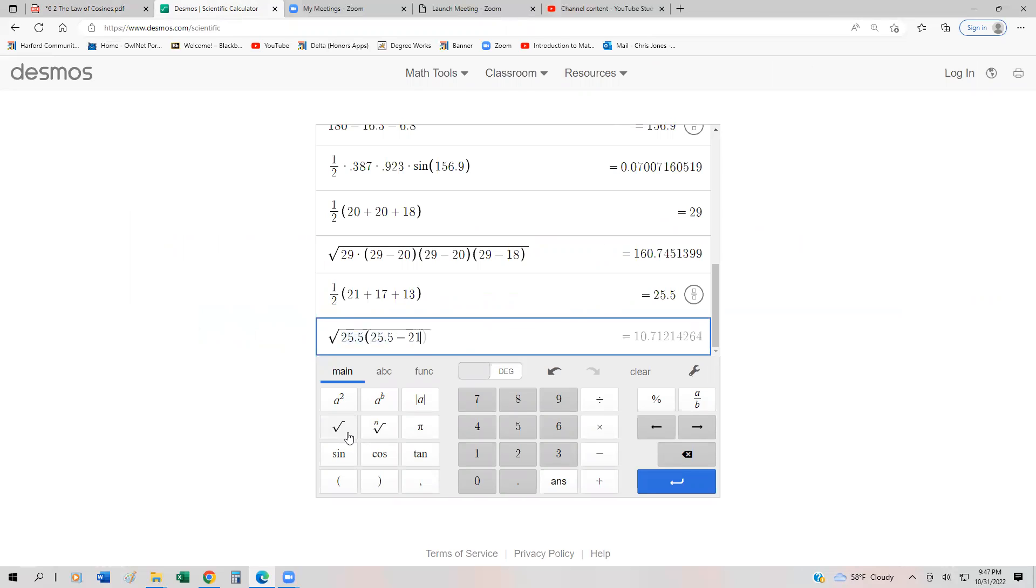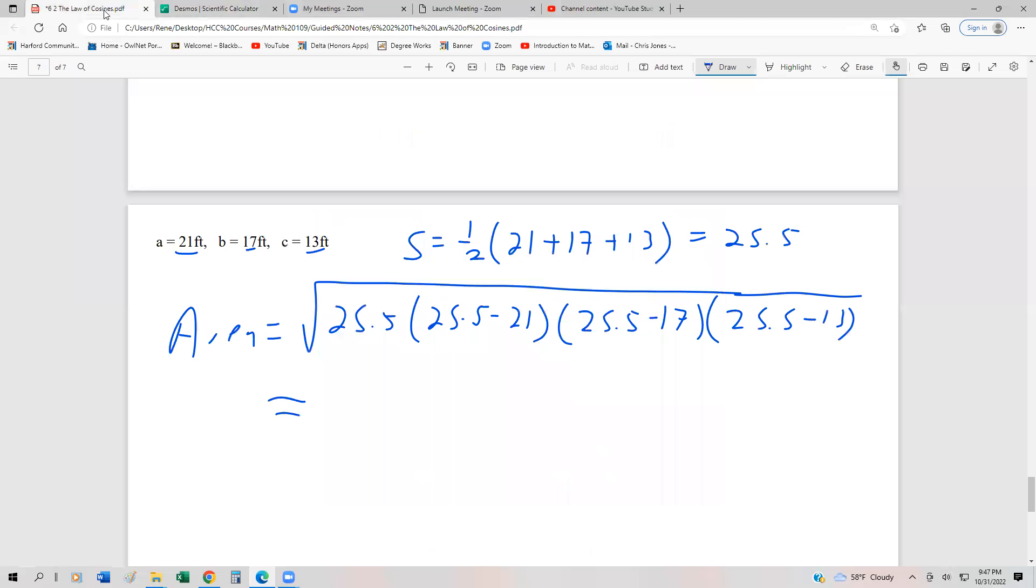25.5 minus 17, and 25.5 minus 13. And that gives us 110.4. So 110.4, and that's in feet squared.